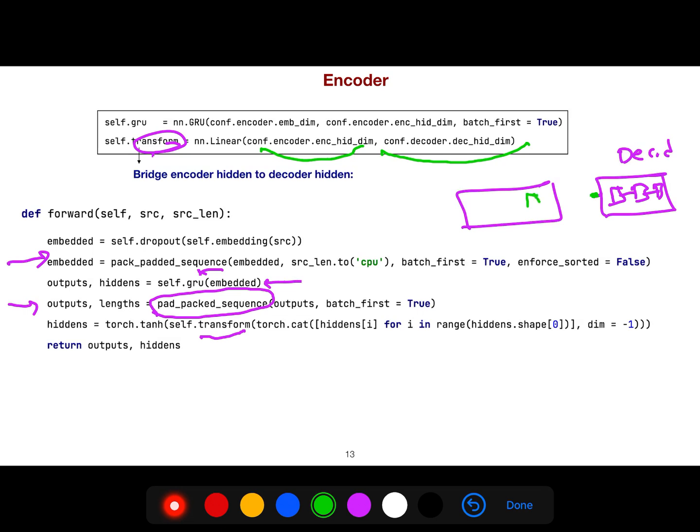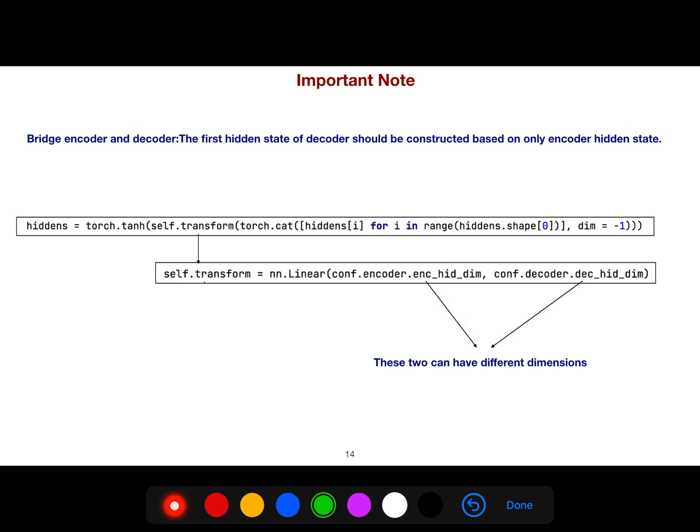So from hidden representation of this, we do some linear combination in order to go to this, to represent this as well. Because other hidden representations, we know how to model them. It is connected and everything is obvious. So the bridge encoder, as I said, the first hidden state of the decoder should be constructed based only on encoder hidden states. So that's why we use linear combination.